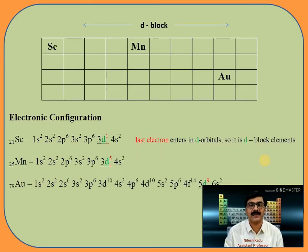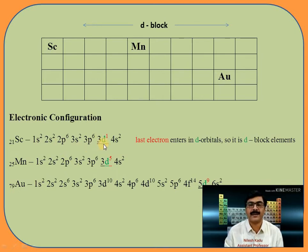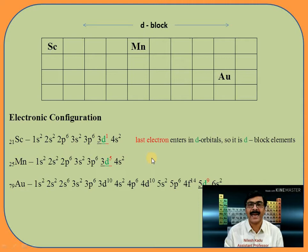Now we move towards D block. I will take three elements: scandium, manganese, and gold. In scandium, the last electron enters in 3d orbital. In manganese, the last electron enters in 3d orbital. And in gold, the last electron enters in 5d orbital. So when the last electron enters in a d orbital, it is called a D block element.